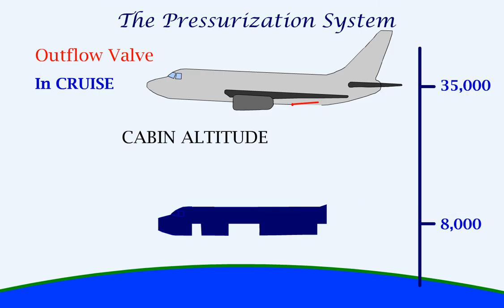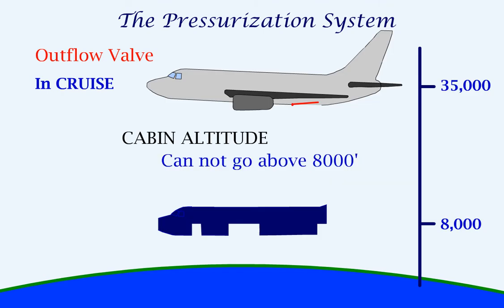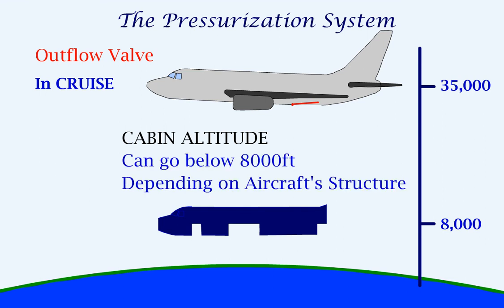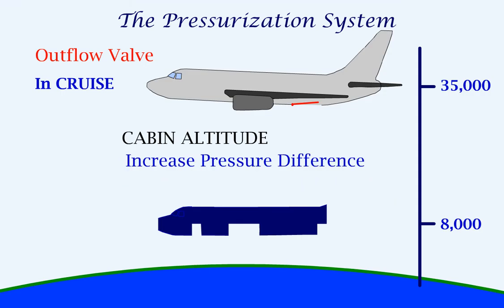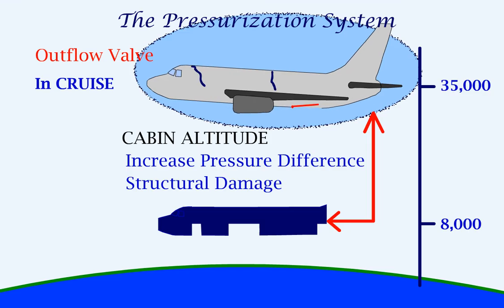At this cabin altitude, the pressure is comfortable and there is enough oxygen available for breathing. The cabin altitude cannot go above 8,000 feet as the oxygen contained in the air will not be sufficient for humans. The cabin altitude can go below 8,000 feet if the aircraft structure is strong enough. This is because there will be a severe increase in the pressure difference between the pressure inside the aircraft and the ambient pressure, which could result in structural damage.